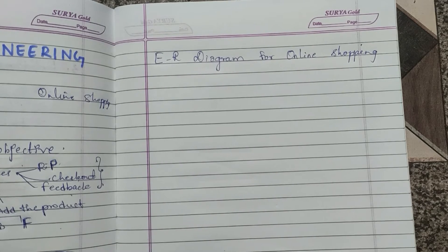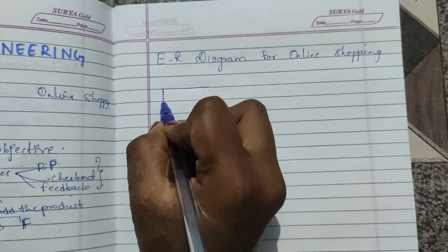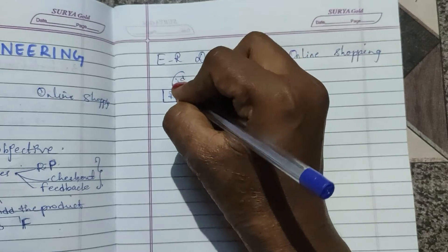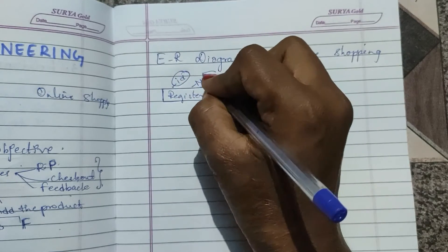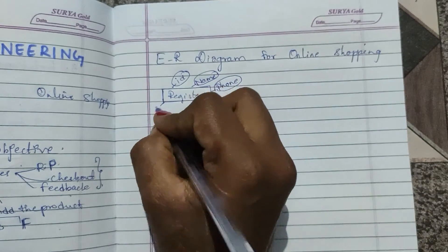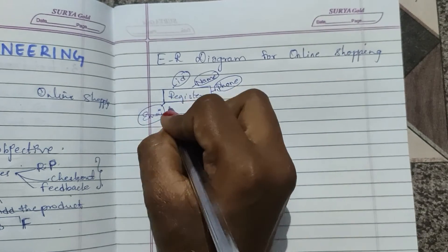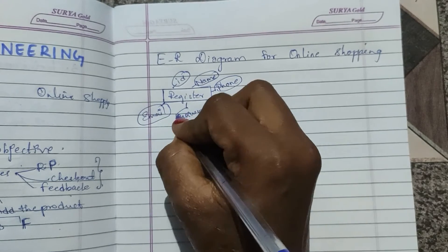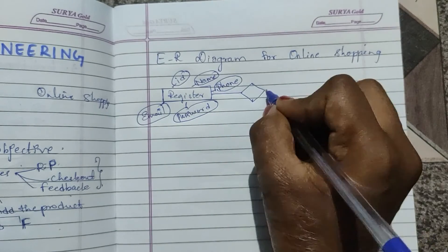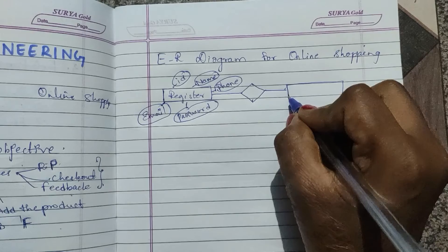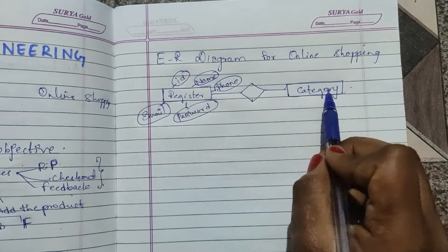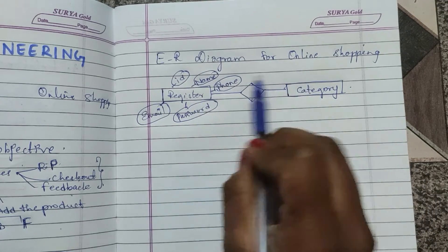Now let's make the ER diagram for online shopping. First I have a register entity. The attributes for register will be ID, name, phone number, email, password, etc. Then I draw a connecting line with a diamond (decision symbol) to the next entity, which is category.